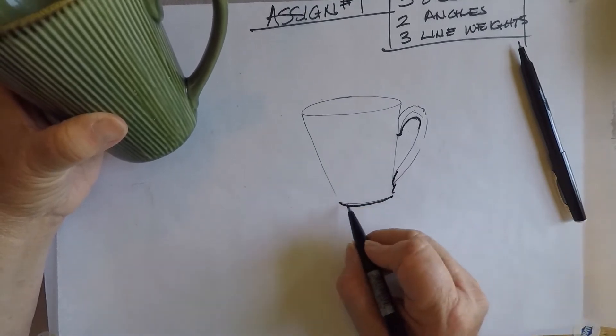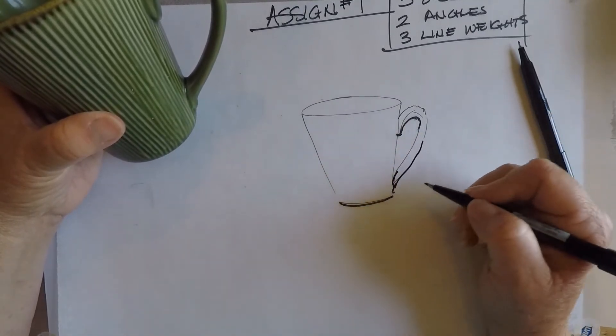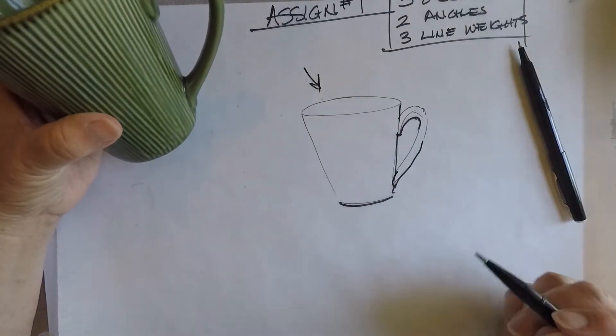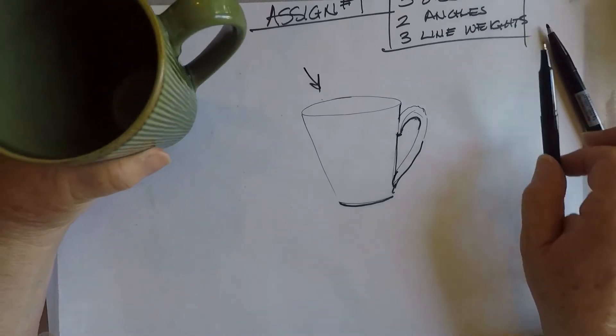So where the cup, the base of the cup, the underside of the handle is this side. So again, this is like if the light's coming this way. Okay, so now let's try it with a different angle.